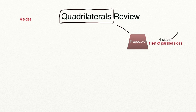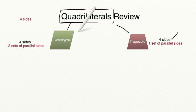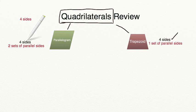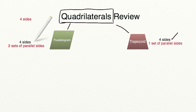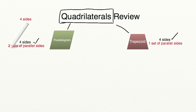We're next going to look at a parallelogram. A parallelogram is also a four-sided shape. As you can see, it's below quadrilaterals and it has two sets of parallel sides. It also meets the expectation of having four sides, but then we begin to get more specific.